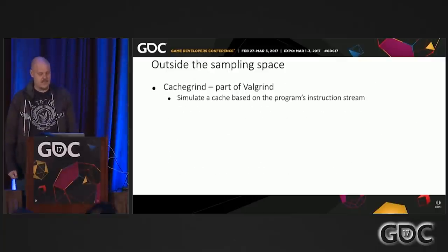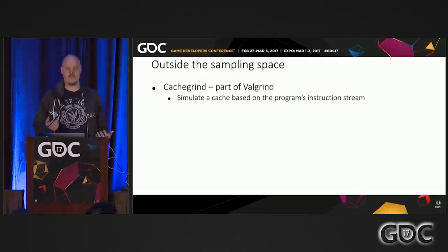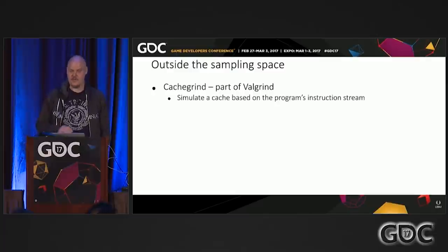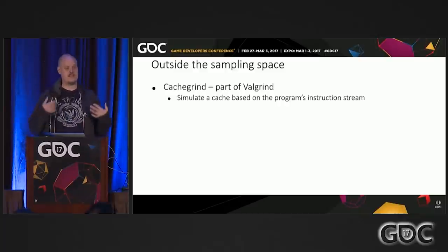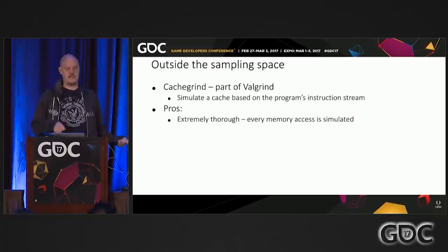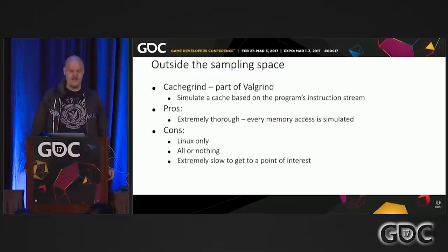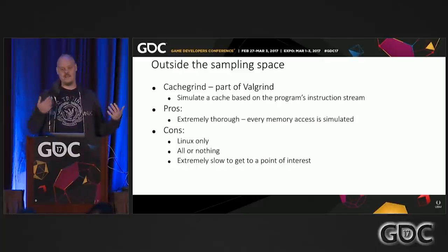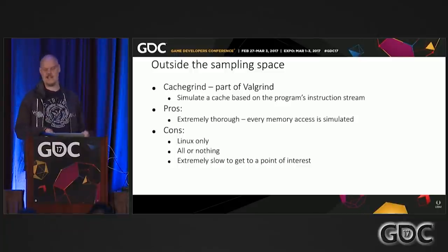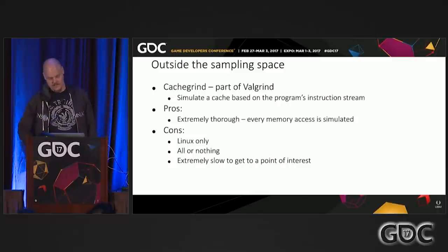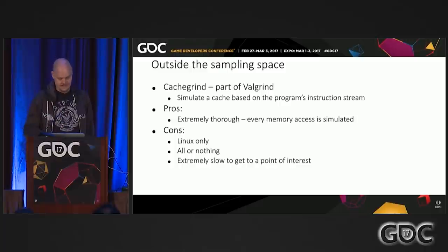Outside of the sampling space, there are tools like Valgrind that take a completely different approach. This is a tool that sets up a synthetic CPU and then runs your program on that CPU. Part of that is cachegrind, a module that breaks down your instructions — reads and writes — and simulates them on top of a cache, giving you super detailed output. But it comes with cons: our games don't run on Linux where this thing runs, and it's all or nothing. You can't decide to do this halfway through — you'll be navigating menus and loading levels at a hundred times slowdown.